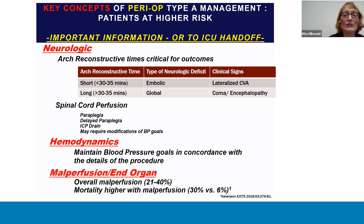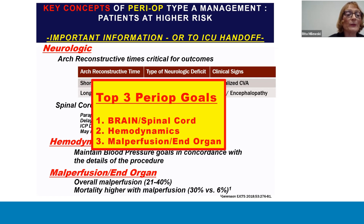Perioperatively, there must be a high degree of suspicion because mortality is higher with a greater number of organ systems involved in malperfusion. At handoff, it's important to know if there was malperfusion going into the operating room and whether it was addressed intraoperatively or not. The top three postoperative goals and information that must be obtained from handoff from the OR to the ICU are brain and spinal cord ischemia, hemodynamics, and malperfusion and end organ status.